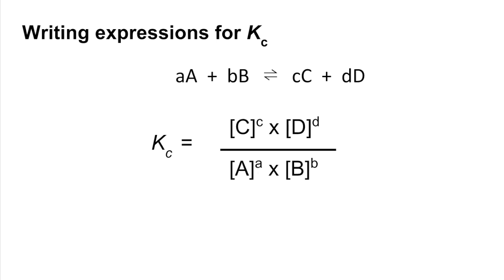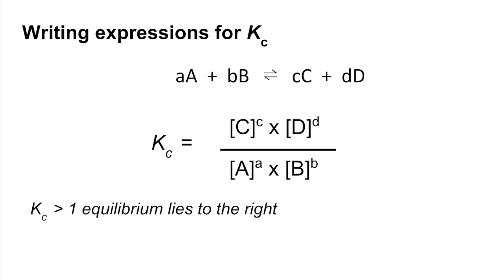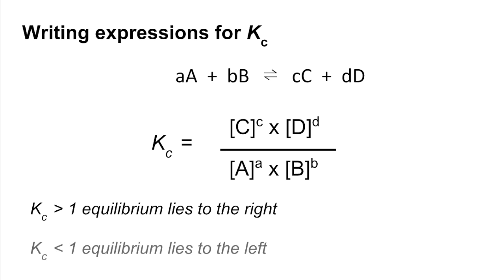Finally, the size of Kc. If Kc is greater than 1, it means we have a greater equilibrium concentration of products relative to reactants, so the equilibrium is lying to the right hand side. If Kc is less than 1, the equilibrium must be lying to the left.